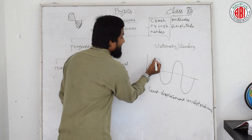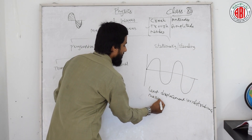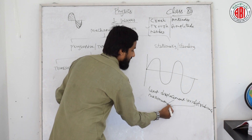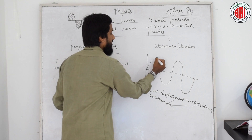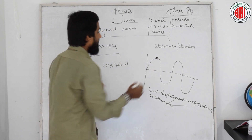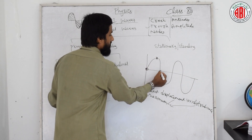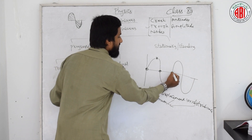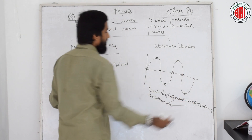This part where the displacement is maximum — or you can say the disturbance is maximum — is nothing but an antinode. I am cross-marking antinodes and marking nodes with a circle. So: this is a node, this is an antinode, again this is a node, again this is an antinode, again this is a node, this is an antinode, again this is a node, this is an antinode.